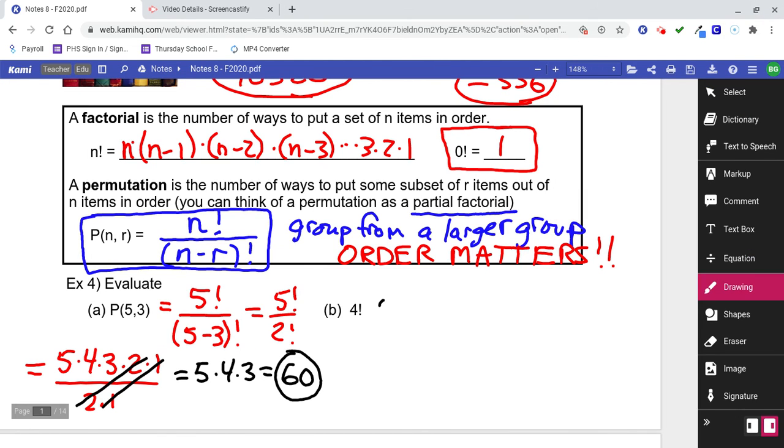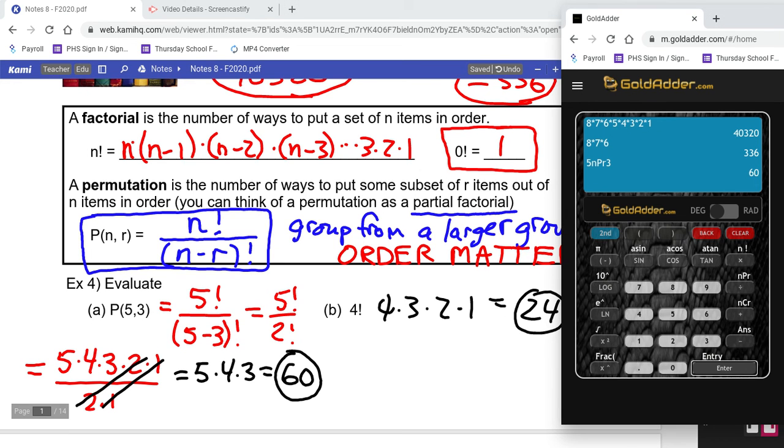Part B says 4 factorial. Well, that's 4×3×2×1. We can do that in our head. That's 12×2, which equals 24. But you could also, on your calculator, find that exclamation point. 4 factorial is 24.